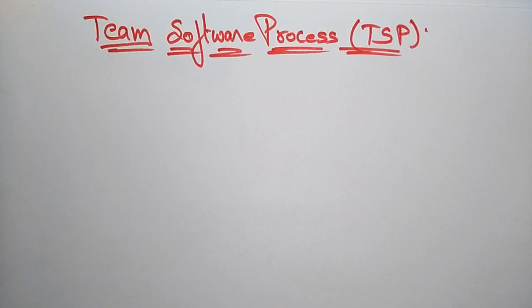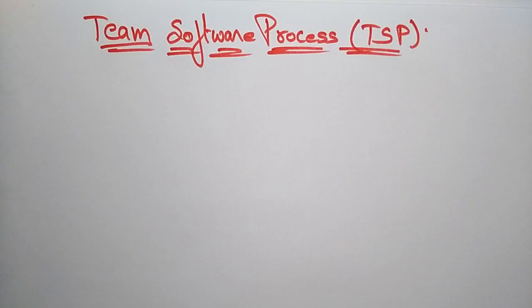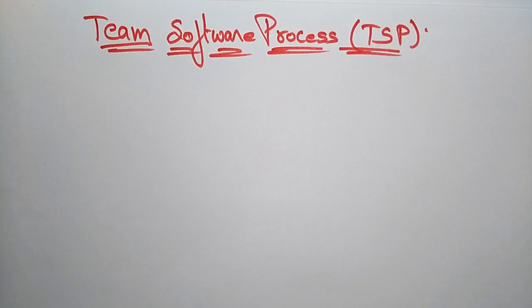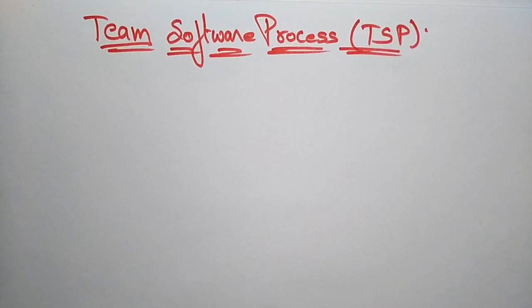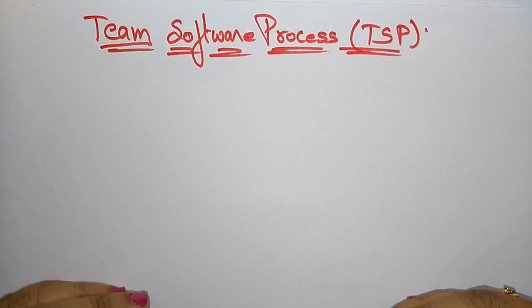Hi students, coming to the next topic: the Team Software Process. In the previous video I explained about the Personal Software Process. If you want to develop a software product or process, we looked at the personal way of solving the problem — the Personal Software Process. In the same way, let us see the Team Software Process.